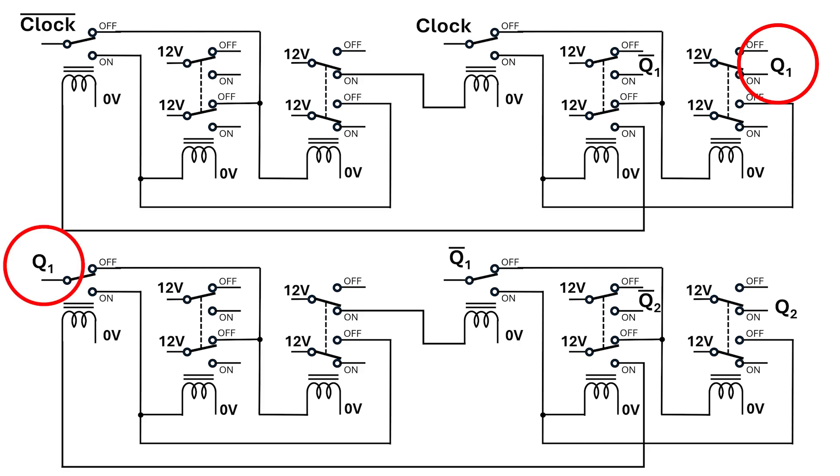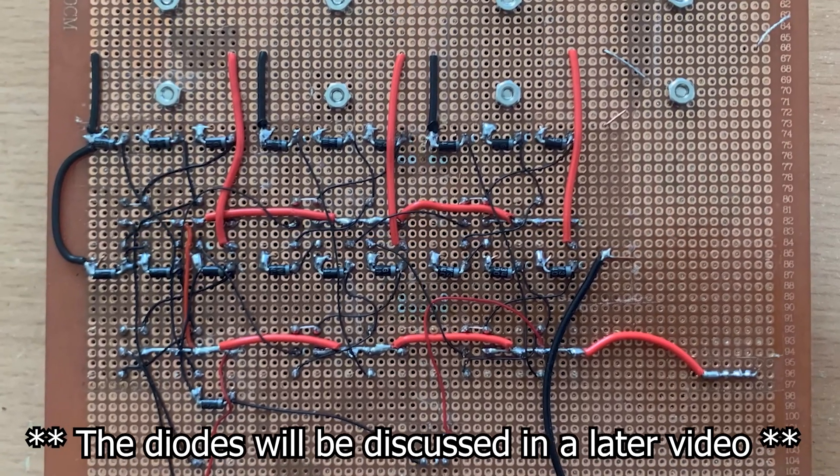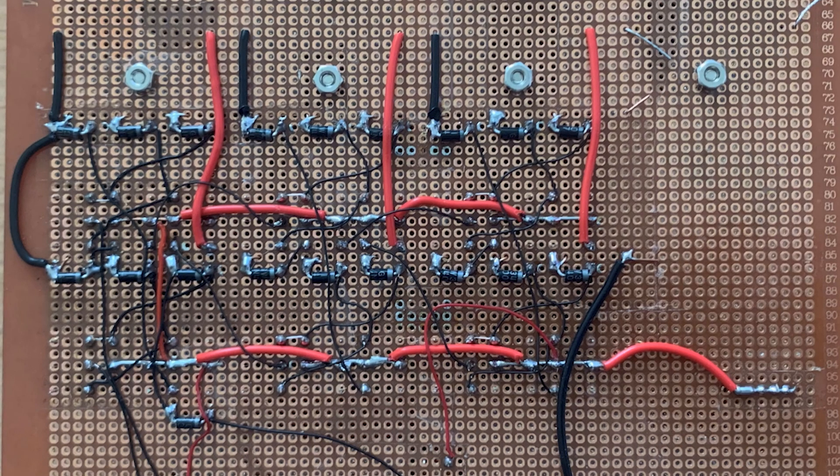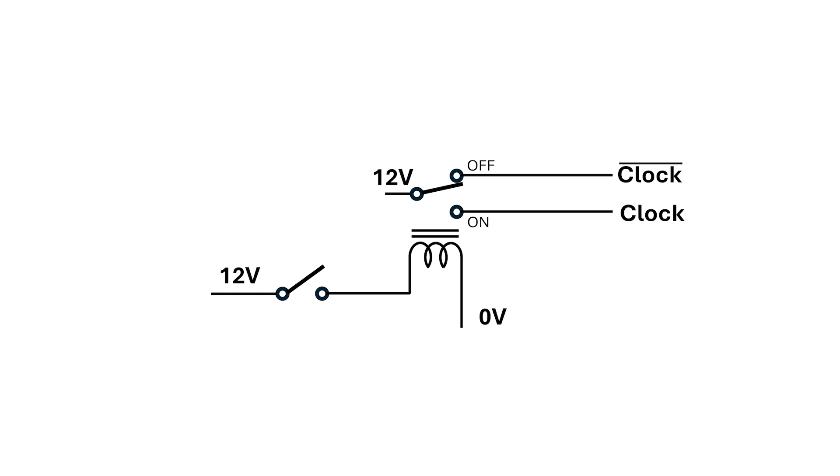I can cascade these stages together, using the Q1 and Q1-bar signals as clock and clock bar for the lower D-type flip-flop. In this example, I've connected three D-type flip-flops together. I just need a clock and clock bar for the first input. I've connected a push button to the coil of a relay. Common is 12 volts. The on contact is our clock signal, and the off contact is our clock bar signal. Let's see if it works.